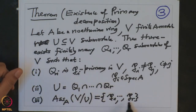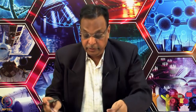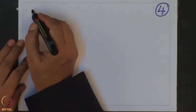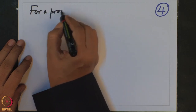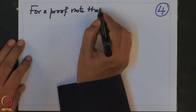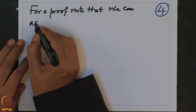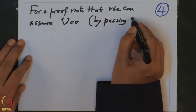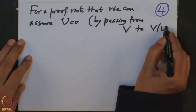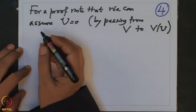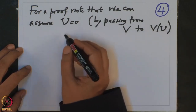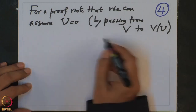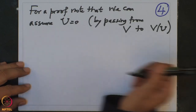So if you want to find associated primes, you find a primary decomposition and look at their corresponding prime ideals — those will be the associated prime ideals. For the proof, note that we can assume U is 0 by passing from V to the residue class module V/U, and then the primary decomposition components become Q_i/U.